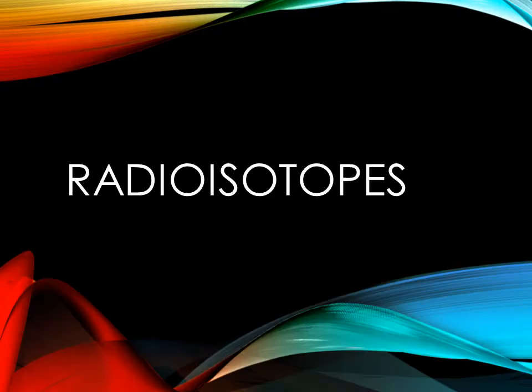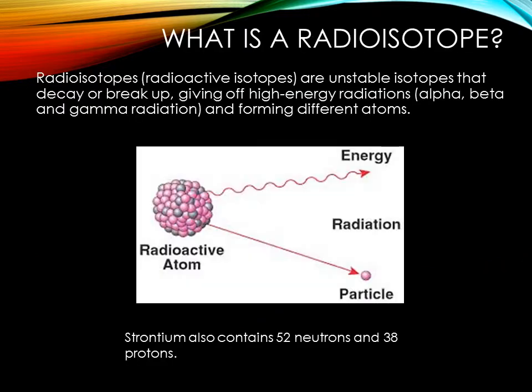Today's lesson is about radioisotopes. There are many different kinds and each of them give out different emissions. But first you should know what a radioisotope actually is. Radioisotopes are unstable isotopes that decay or break up, giving off high energy radiations and forming different atoms.